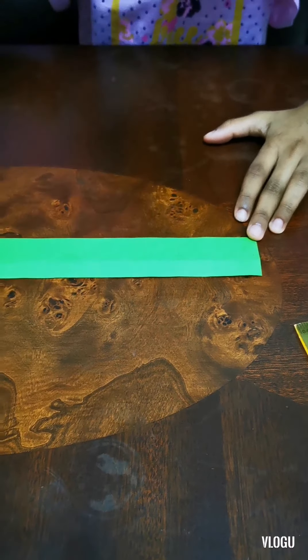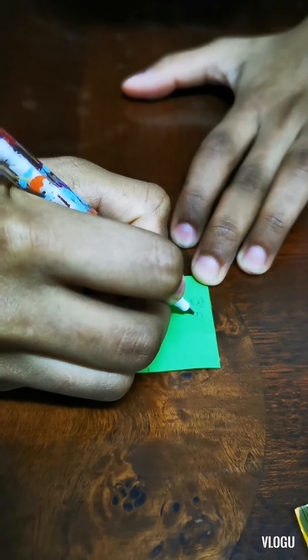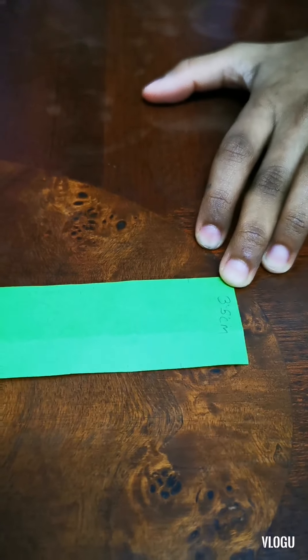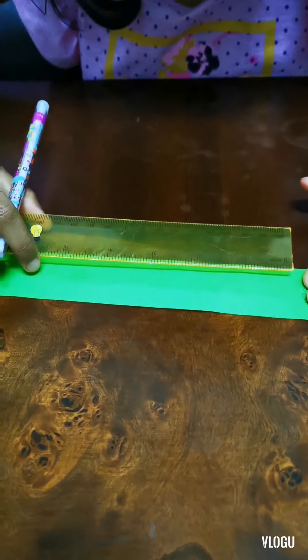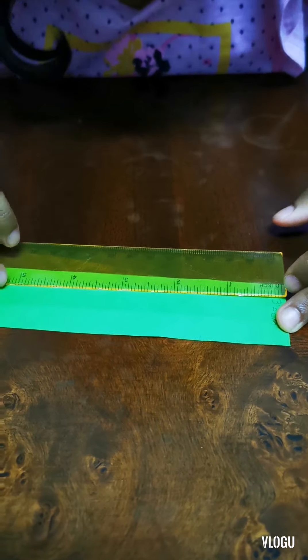This is a strip of paper which is 3.5 cm width. Now, use the ruler to mark each centimeter 4.